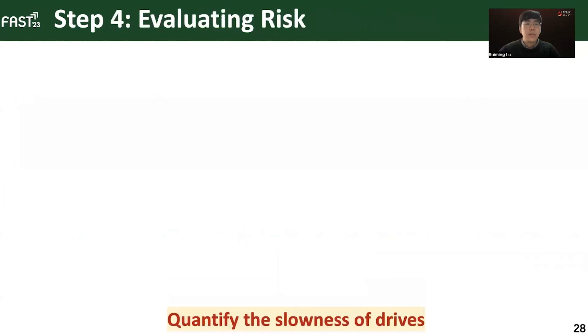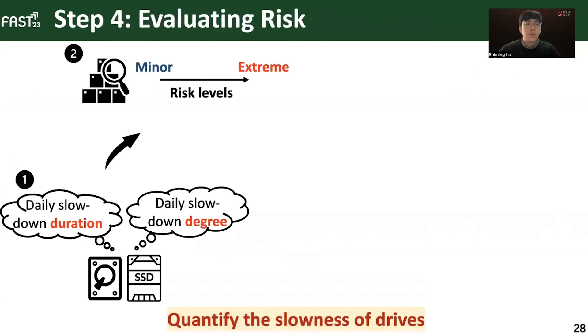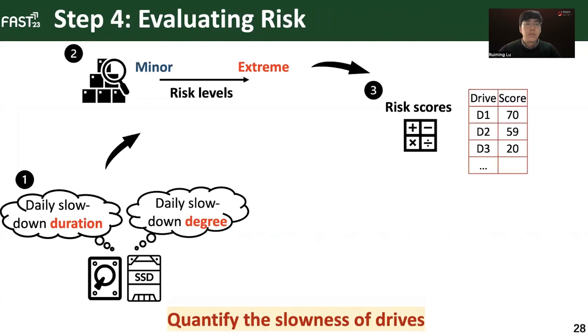To benchmark and quantify the slowness of drives, we first convert the per-drive daily slowdown duration and degree into risk levels. Then, we assign different weights to the risk levels and calculate the risk scores. The higher the risk score, the more likely and more severe a drive is fail-slow. Eventually, on-site engineers can prioritize and manually inspect drives with the highest risk scores in the first place.